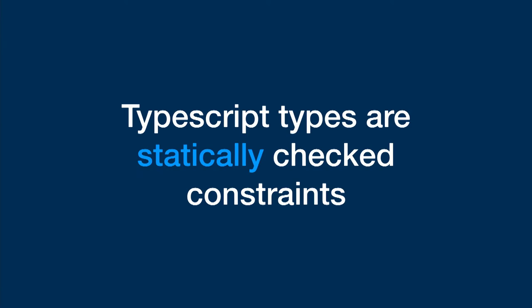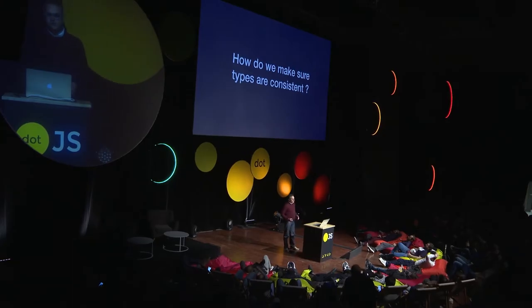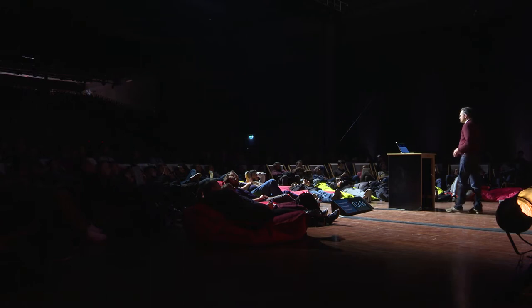The power of types in TypeScript is that there are constraints that verify our code statically. However, types are only a model of reality, and they go away at runtime. This raises the important question: how do we make sure that the types are consistent with the actual runtime usage? Because otherwise, static verification is of no use.